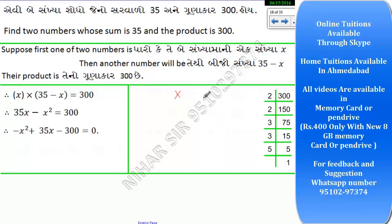We need 300. Moving 300 to the other side — minus minus gives plus — so we get minus x squared plus 35x plus 300 equals zero. Now we need to split the middle term. Note that 35 gives us 5 as a factor to work with.